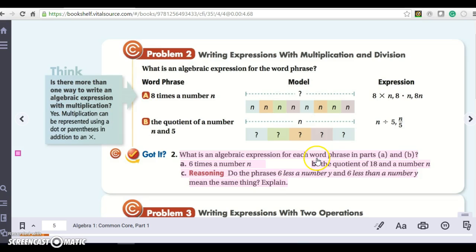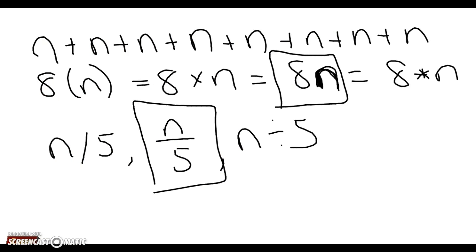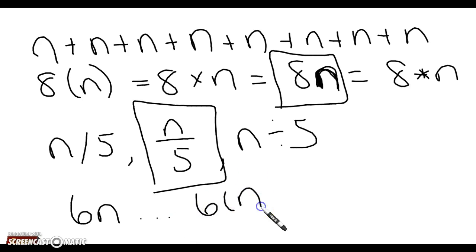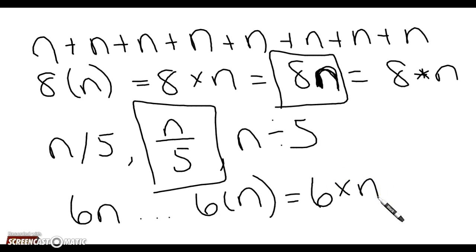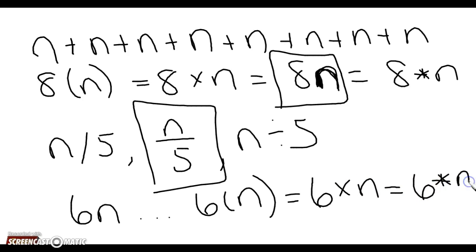What is an algebraic expression for each word phrase? So six times a number n. If I have six n's, I should write it as six n. I could also write it as six times n using a dot or a multiplication sign.